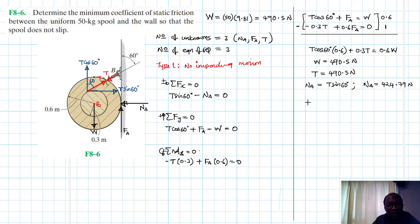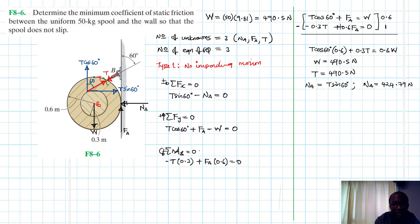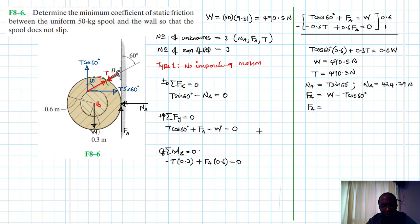Finding FA using the y-equation: FA equals W minus T cos 60, so FA equals 490.5 minus 490.5 times cos 60, which gives FA equals 245.25 Newtons.